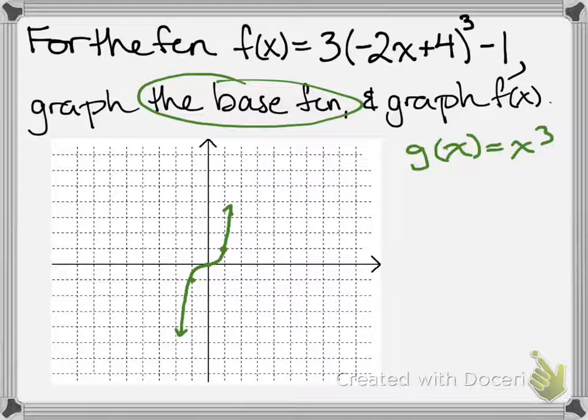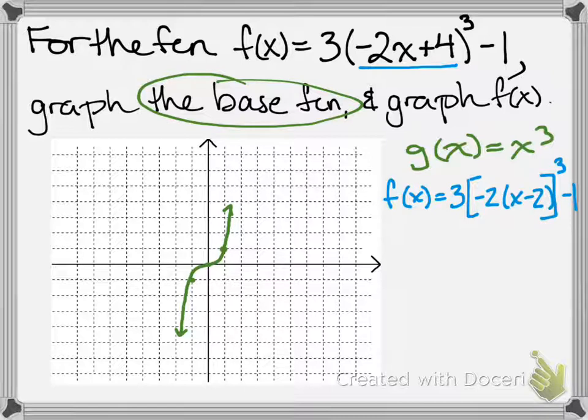And now because of that whole business happening there, we have to do some factoring. So we can factor out -2 and we'll be left with -2(x-2)^3 - 1.